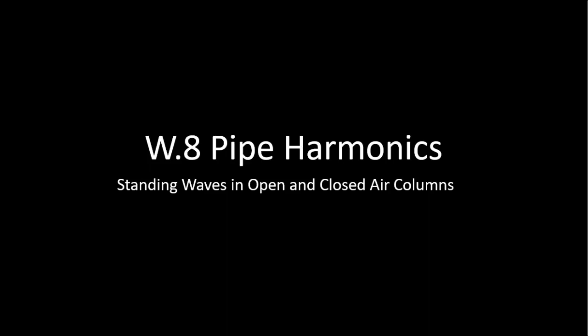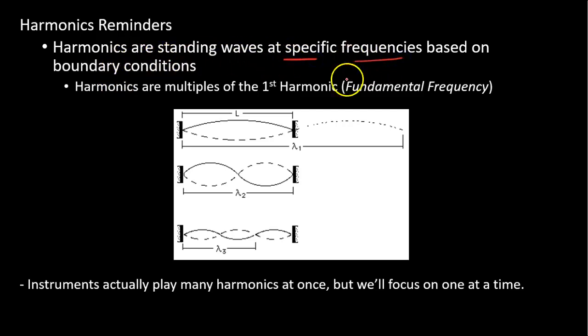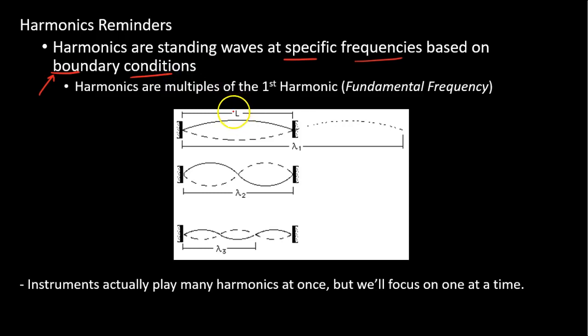That's why it's often referred to as pipe harmonics, or the harmonics in air columns, because all these things can be simplified as columns where these air particles are able to vibrate. We're still discussing harmonics, which means it's helpful to go over some key reminders. A harmonic is a standing wave at some specific frequency. The specific frequencies are always based on the boundary conditions — what is going on at that material.